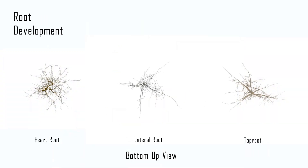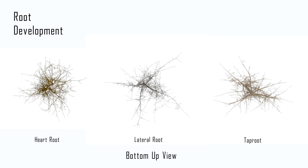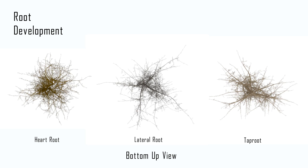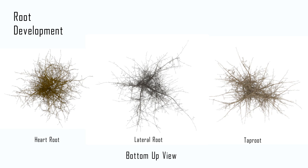When viewed from the bottom up, differences of branch development between the heart, lateral, and tap root system become visible. Heart roots possess a meandering shape, lateral roots are long slender branches, and tap roots have a sturdier, more compact appearance.